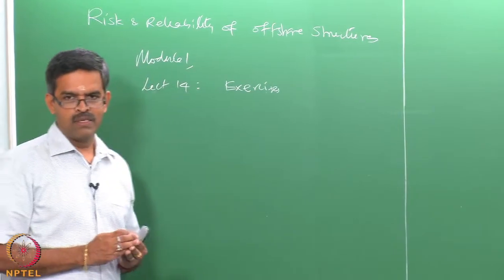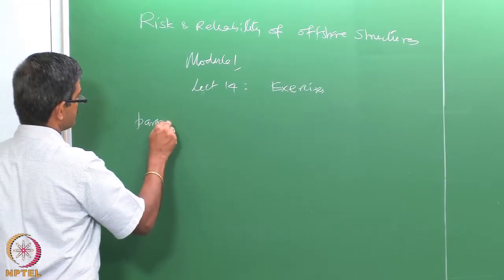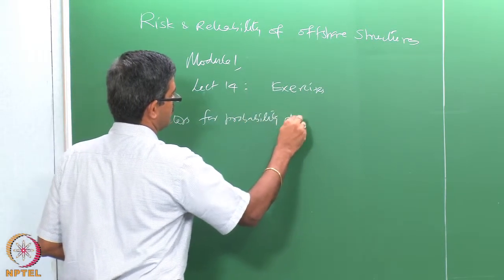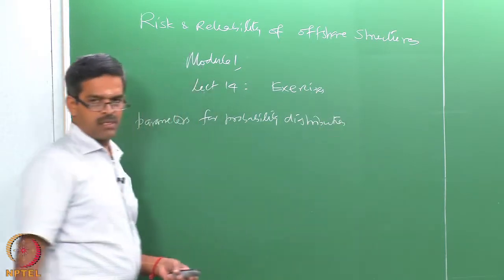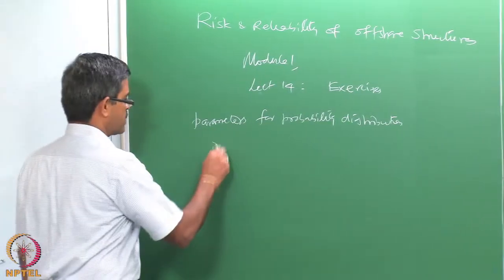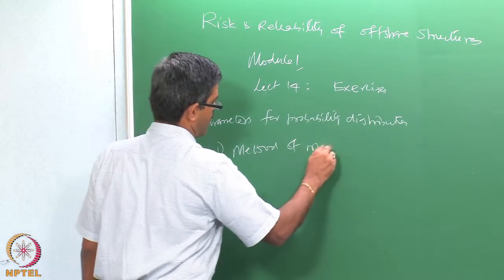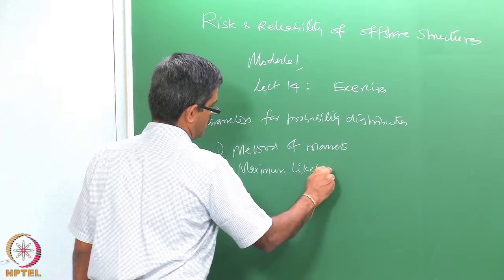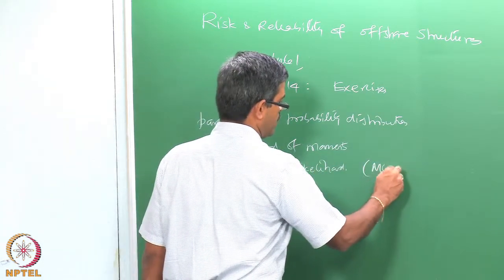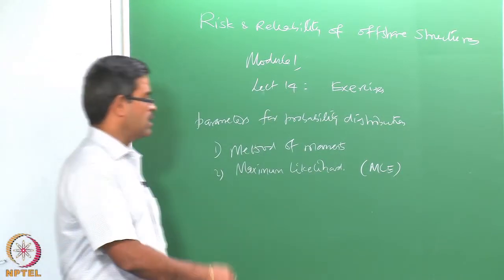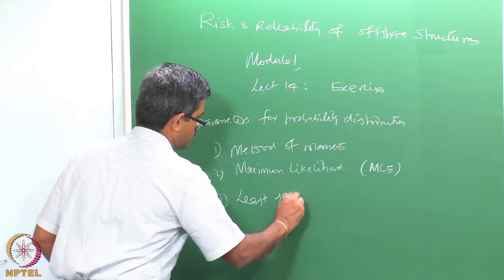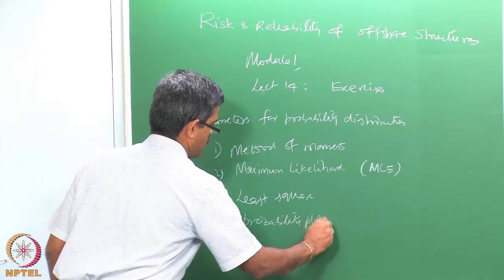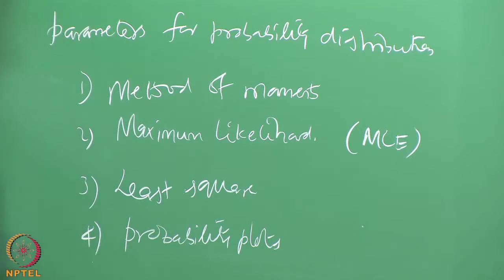Just to go back slightly, we have been discussing parameters that need to be estimated for probability distributions, and there are many methods based on which these parameters can be estimated. We discussed the method of moments and maximum likelihood method (MLE) in the last lecture. In this lecture, we will continue with the other two methods: least square approximation and probability plots, which is a graphical method to estimate the parameters of probability distribution.